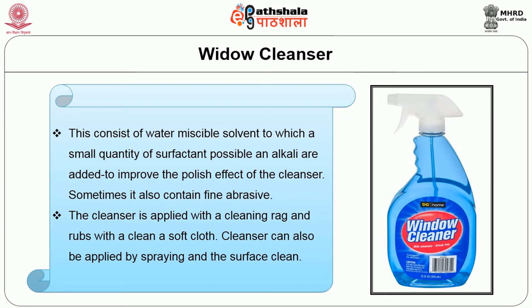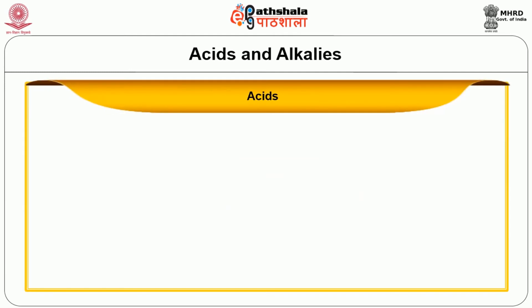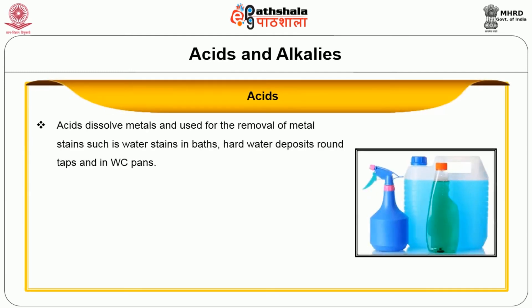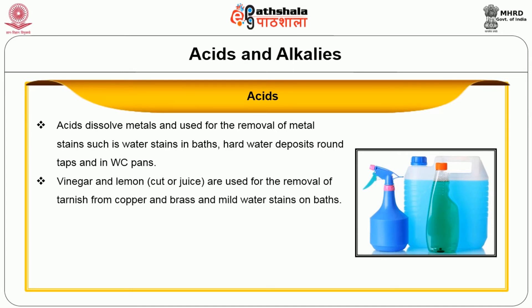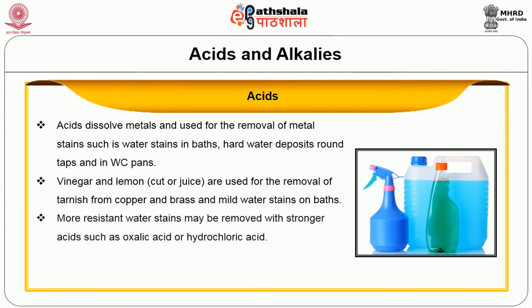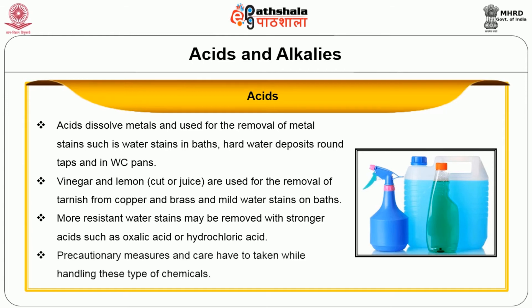Acids and alkalis are important cleaning agents. Acids dissolve metal and are used for removing metal stains such as water stains in baths, hard water deposits around taps, and Western closet pans. Mild acids like vinegar and lemon are used to remove tarnish from copper and brass and mild water stains. More resistant water stains may be removed with stronger acids such as oxalic acid or hydrochloric acid, and precautionary measures must be taken when handling these chemicals.